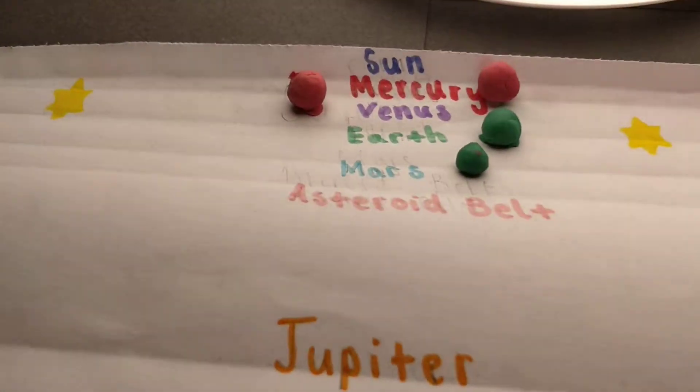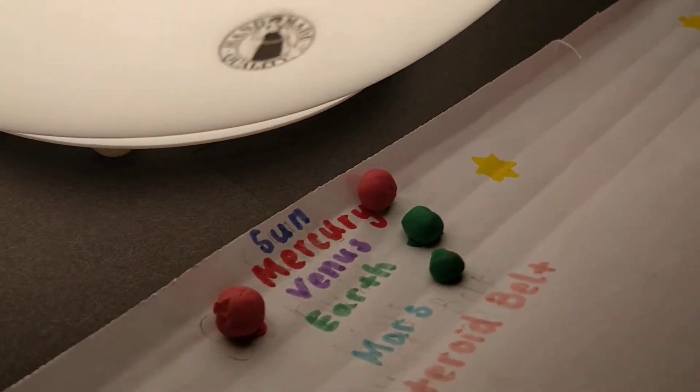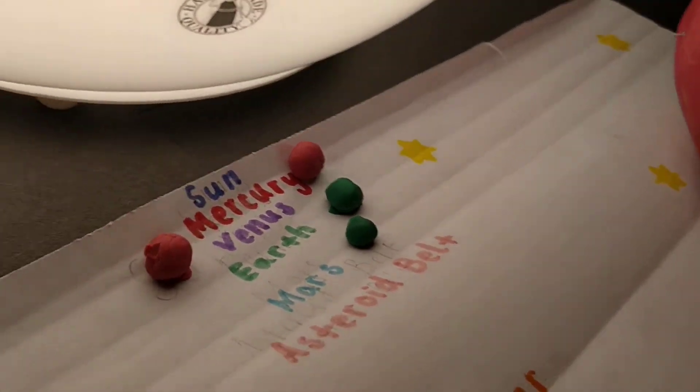Mars. It is often known as the red planet due to its reddish appearance. On Mars, the Sun appears to be about half the size than it does on Earth.